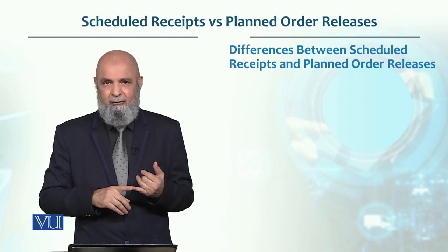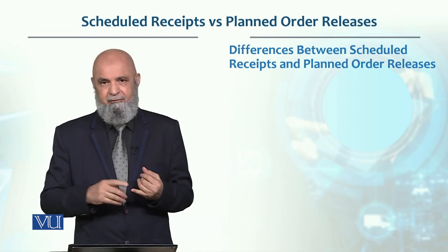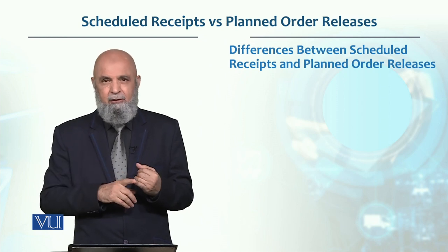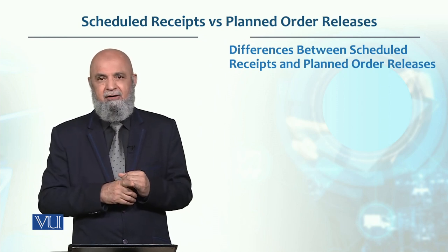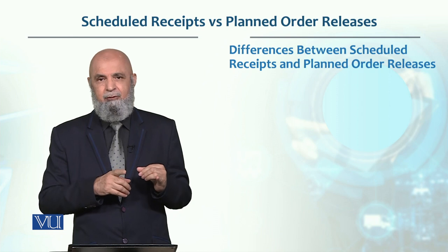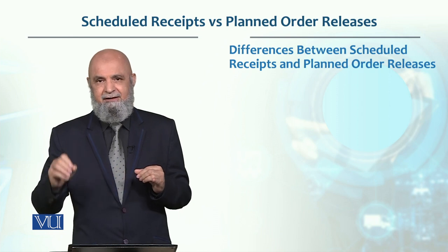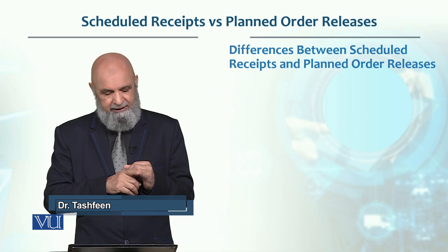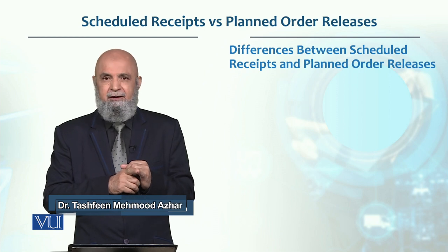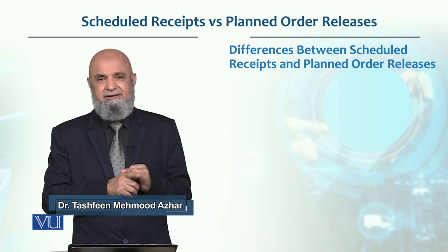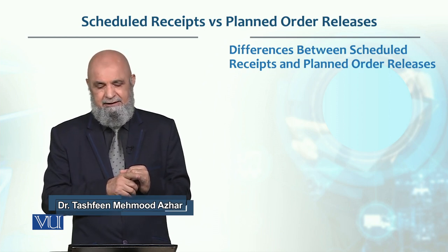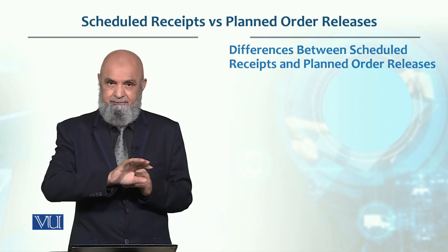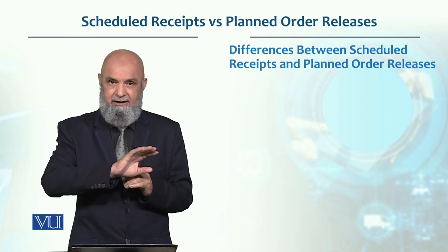If the vendor has been released, the vendor is committed. The vendor has been promised that, for example, by the 15th of March the order will be received. That order will then be available as a Schedule Receipt — the order is released and confirmed.